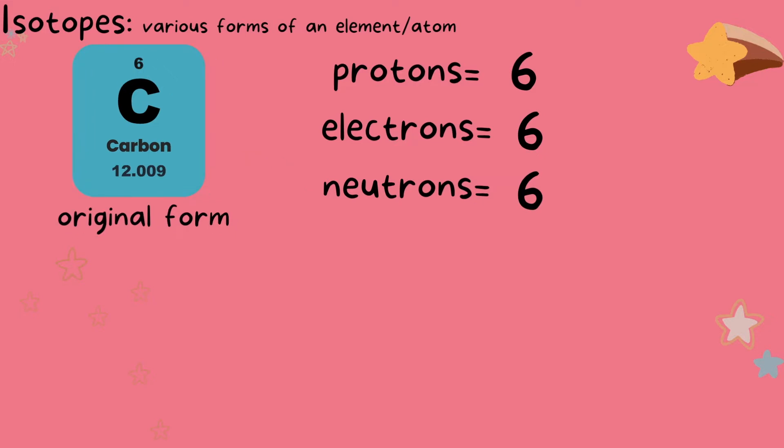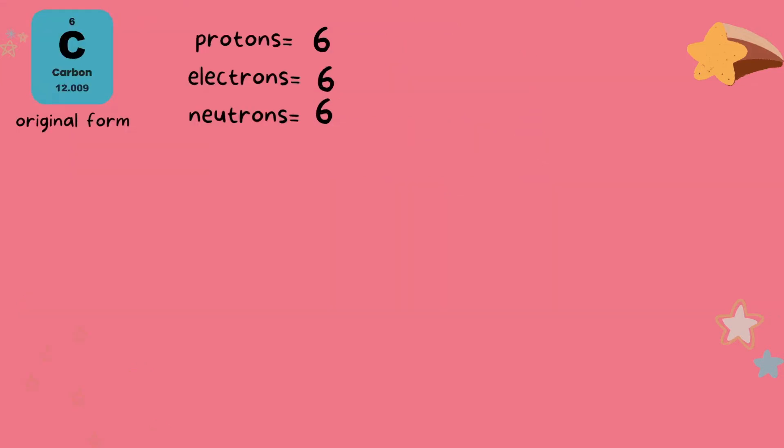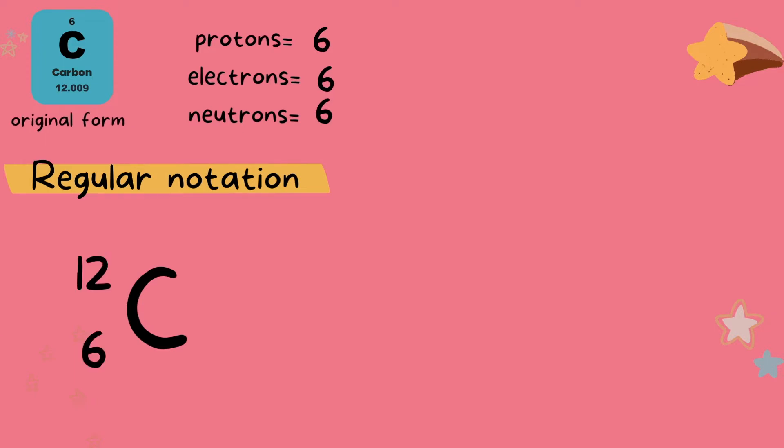I'm going to show you what this would look like in regular notation so you can compare it side by side to isotope notation. So we start by putting the elemental symbol followed by the mass number at the top and atomic number at the bottom. Now let's compare this carbon in its regular form to carbon in its isotope form.